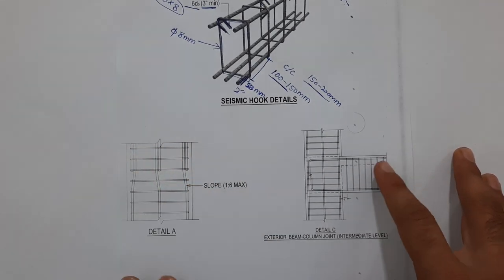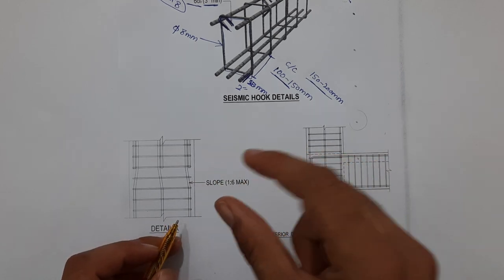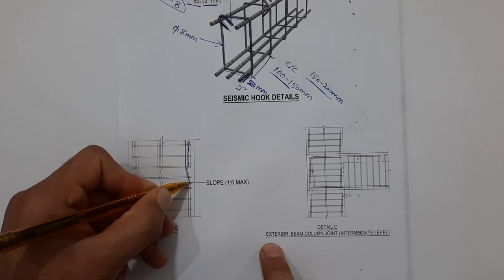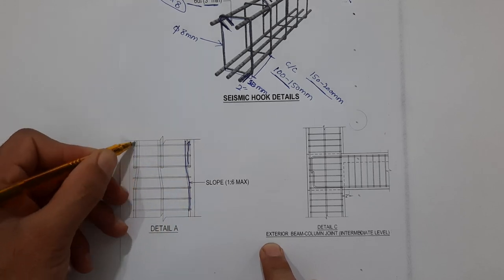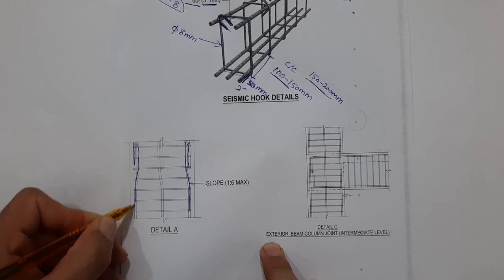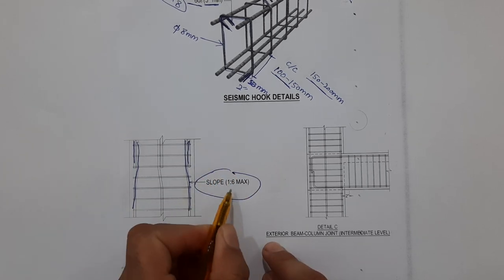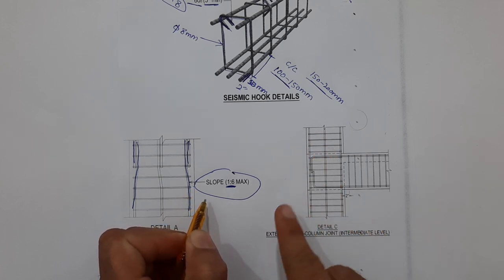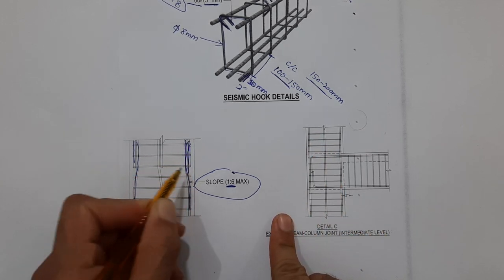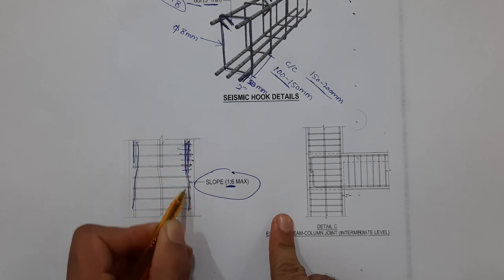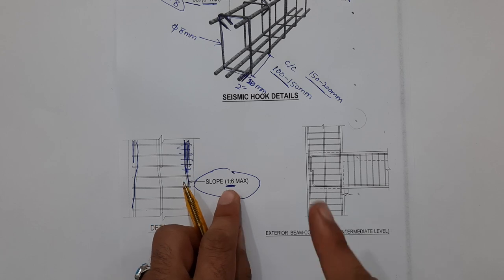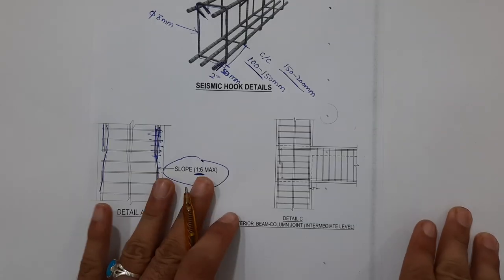Now let me discuss the joint for lapping. You can see this is the lapping in column. We should provide the slope here. The slope should be maximum one ratio six. If you provide the slope, then the other steel should be joined in this place.